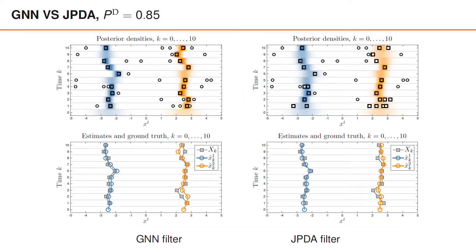If we compare the results from GNN and from JPDA for these measurements, we see that the posterior densities and estimates from both filters are quite similar, although some differences can be seen. This does hold in general for GNN and JPDA. If the SNR is sufficiently high, then often there are not so large differences between the results from the two filters.